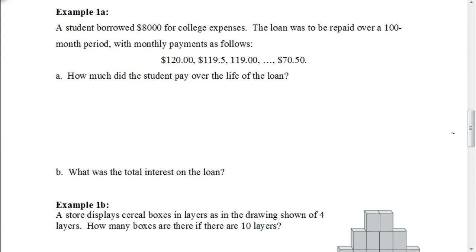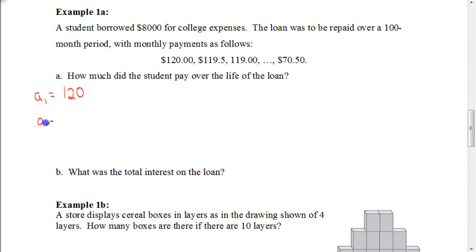A student borrowed eight thousand dollars for college expenses. The loan was to be repaid over a hundred-month period. The first month's payment is one hundred twenty dollars, then one hundred nineteen fifty, then one hundred nineteen, and so on. So A sub one is one hundred twenty dollars, A sub n is seventy dollars fifty cents, and n equals one hundred months — so there are one hundred terms in this series.